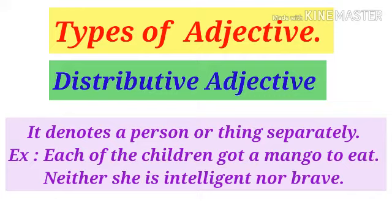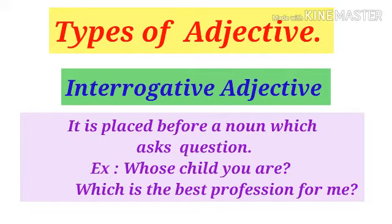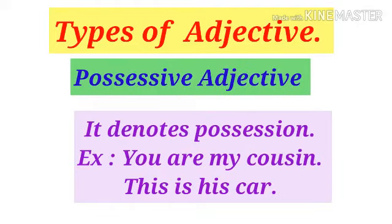The seventh one is known as interrogative adjective. Interrogative means to ask questions, and interrogative adjective is used before a noun to ask questions. Words like 'which', 'whose', and 'what' are interrogative adjectives. For example, 'Whose child are you?' — 'whose' is the interrogative adjective. 'Which is the best profession for me?' — 'which' is the interrogative adjective.